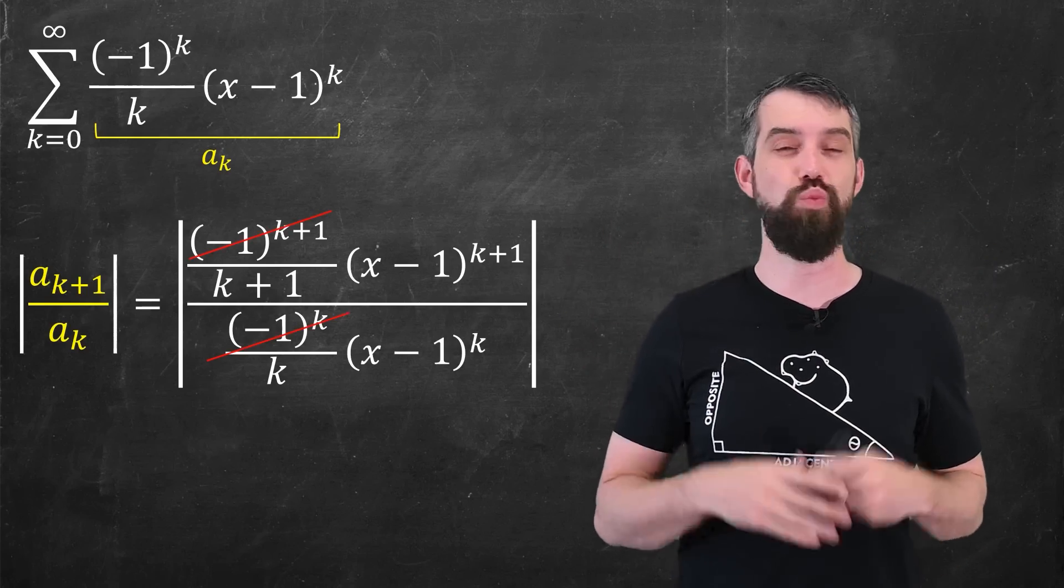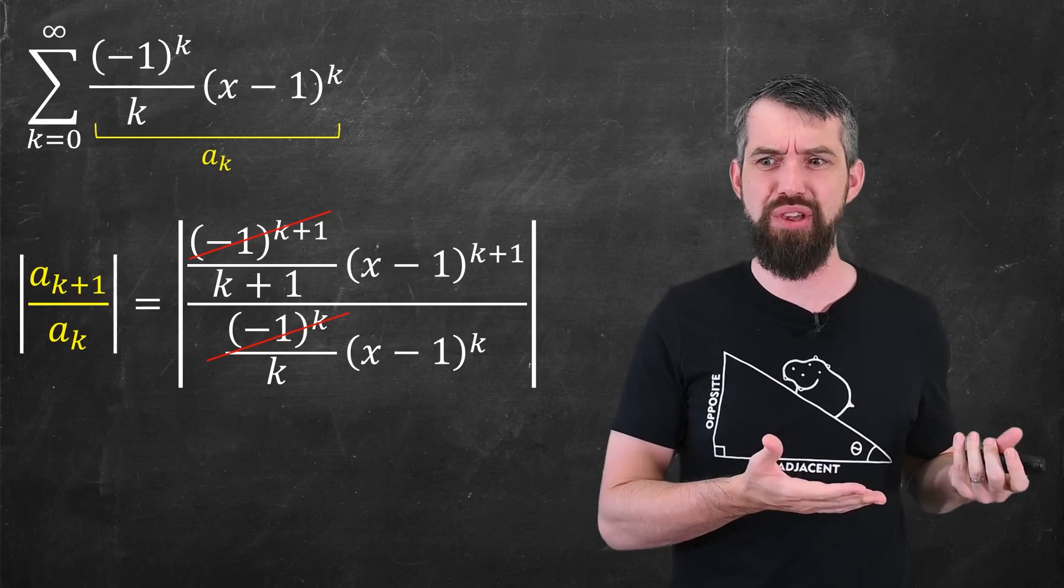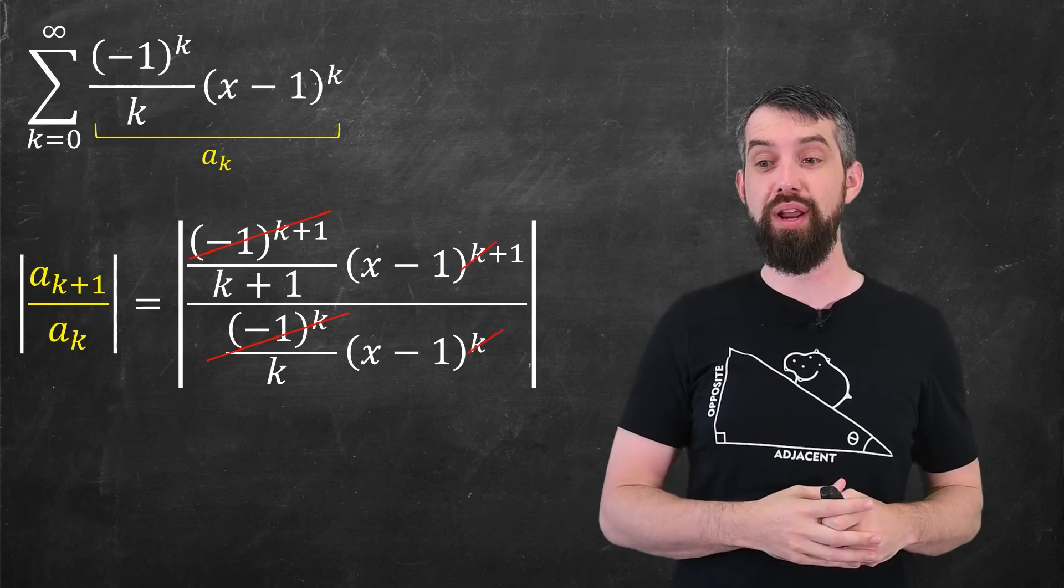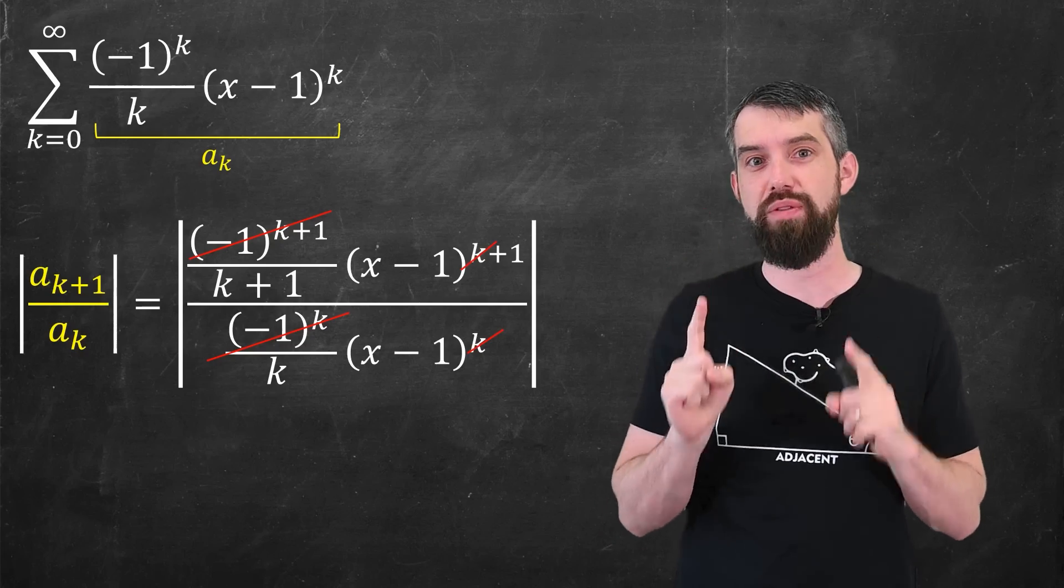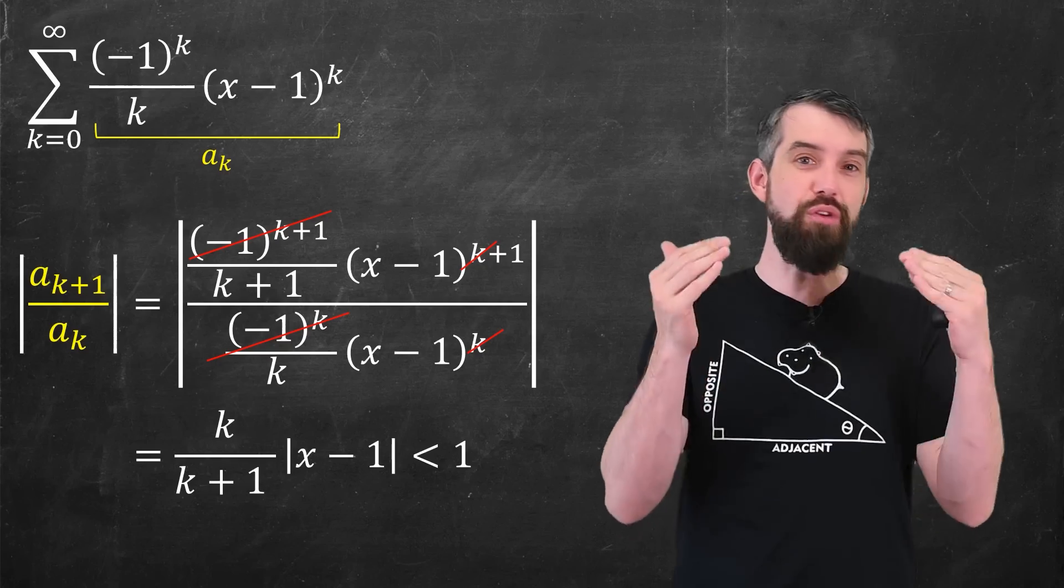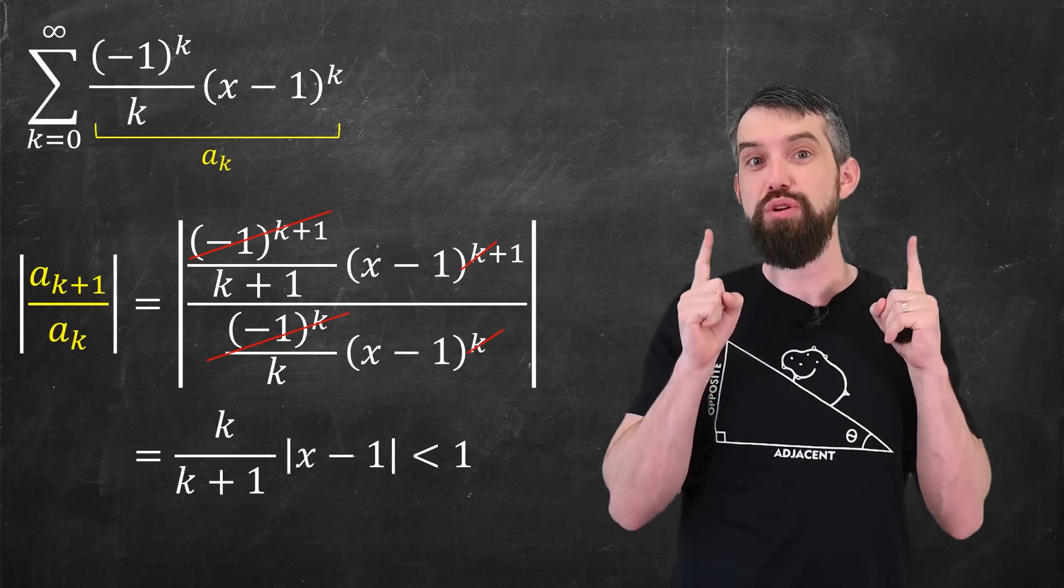We don't have to worry about any of the minus 1s because they're inside of an absolute value. There's a lot of x minus 1s on the top and the bottom. Almost all of them are going to cancel, except just one factor on the top. And so this ratio actually just simplifies to being just k over k plus 1 times the absolute value of x minus 1.